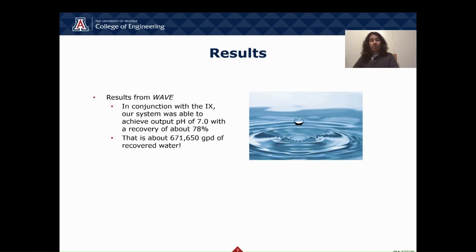The WAVE software produced outputs for each stream leaving each RO and each ion exchange. Overall, the system after ion exchange was able to recover about 78% of the water input into the system — that is 78% of the total 770,000 gallons per day, not each RO individually. This water, after the ion exchange, is very close to a pH of 7.0, representing deionized water. That is a good amount of water to be reused.